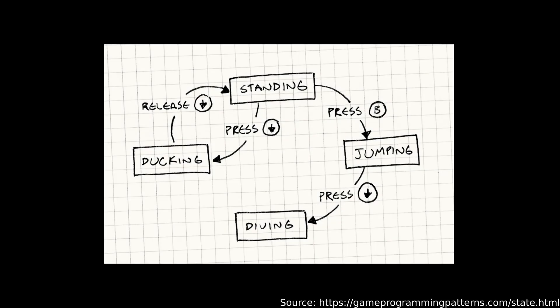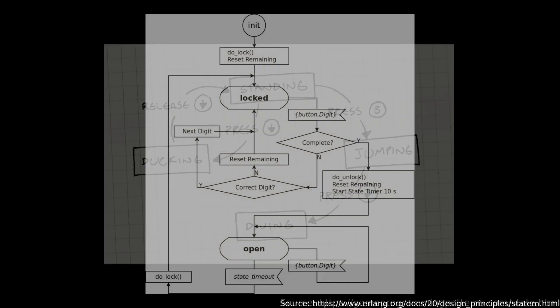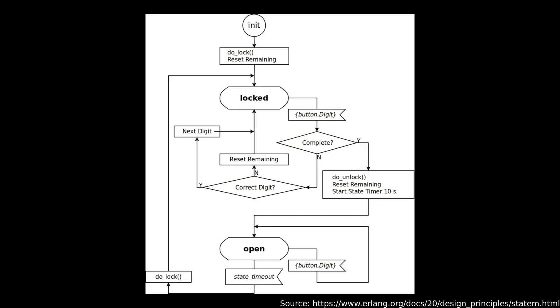A state machine, also called a finite state machine or a finite state automaton, is a conceptual machine that can be in one of a finite number of states at a given time and can transition into one another based on certain inputs.